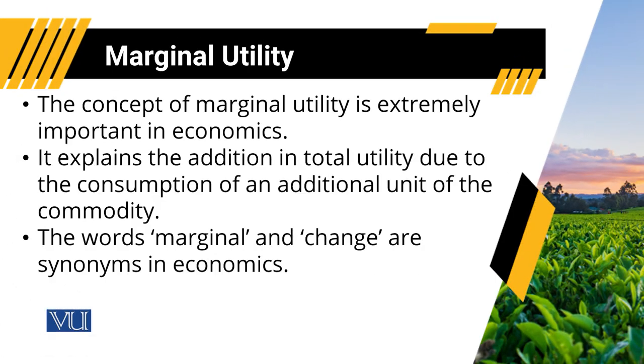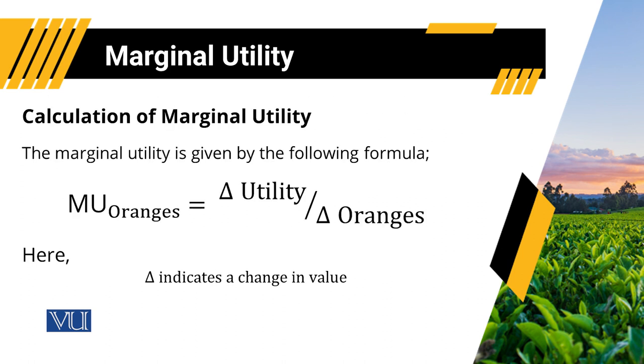For example, if someone is consuming apples, whenever an additional unit of apples is consumed by that consumer, it results in a change in total utility. That change in total utility because of an additional unit of apples is called marginal utility. The word 'marginal' and 'change' are synonyms in economics. To measure marginal utility, we divide change in utility by change in quantity.